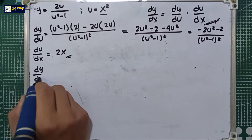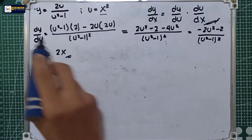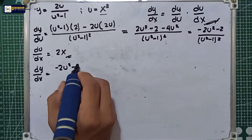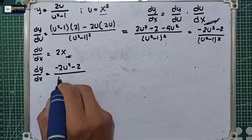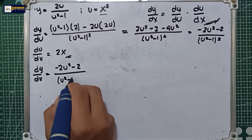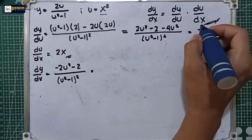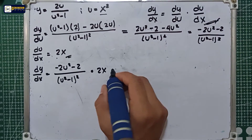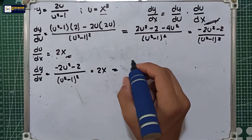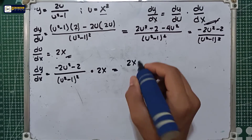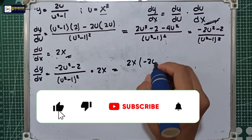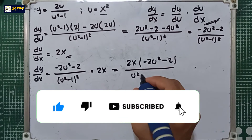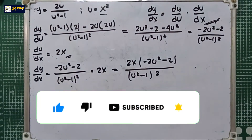In the chain rule, dy/dx equals dy/du multiplied by du/dx. So dy/du is negative 2u squared minus 2 over u squared minus 1 raised to 2, multiplied by du/dx which is 2x.